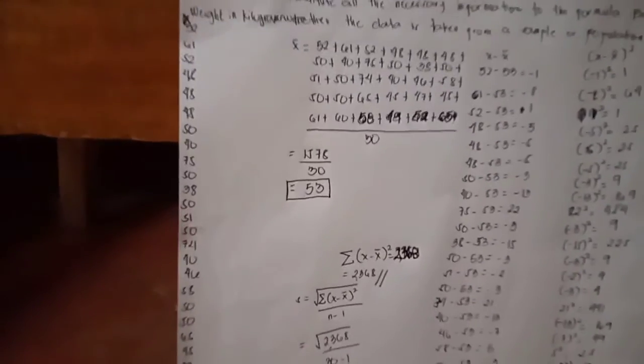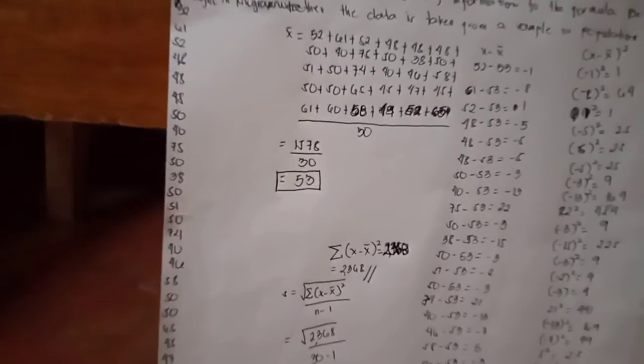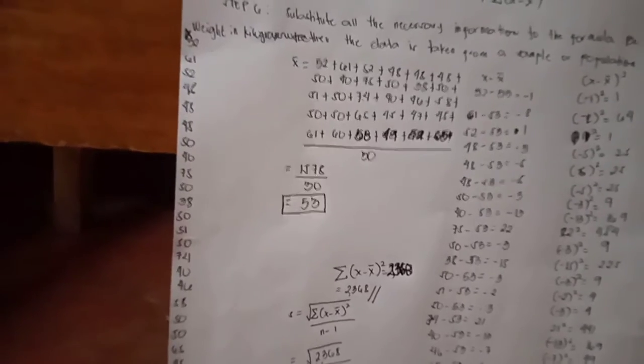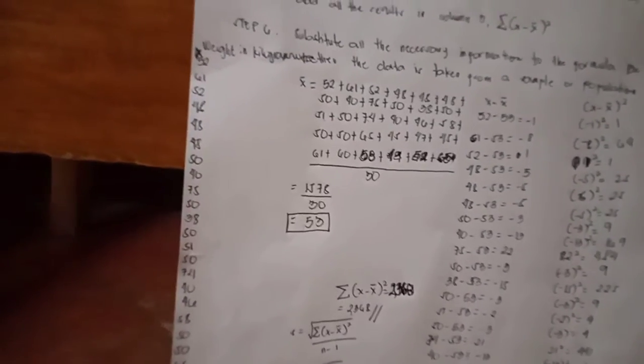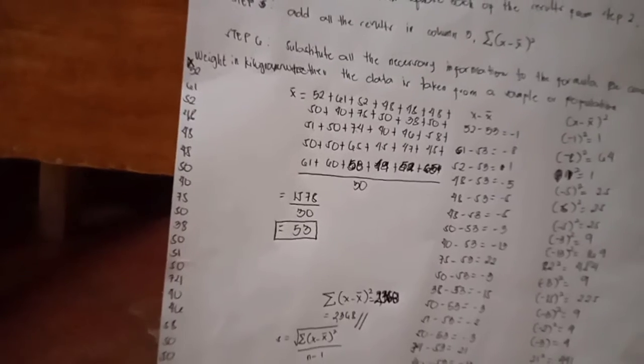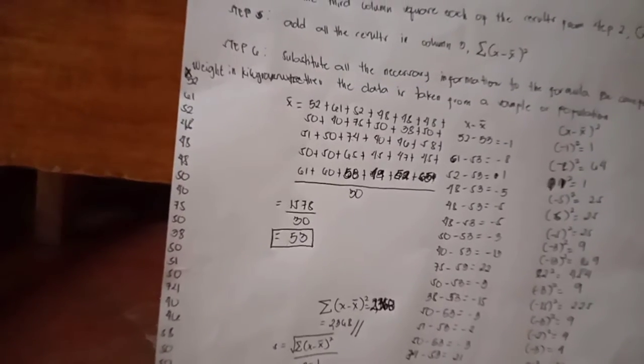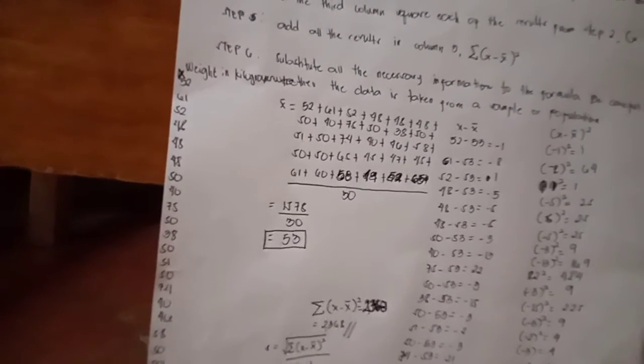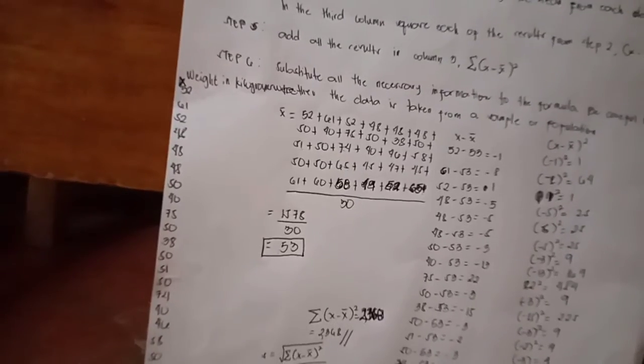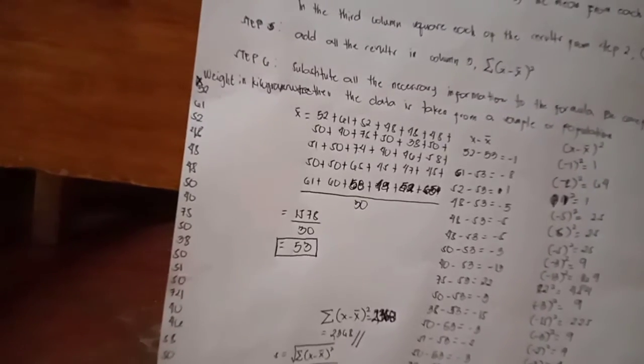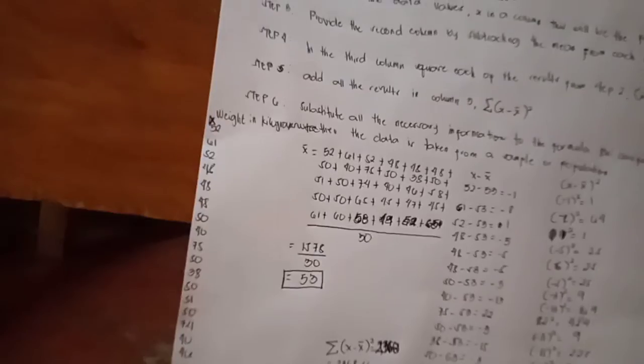For the last step, all we need to do is supply the necessary information to the formula of the standard deviation. It is the square root of the summation of the square between the difference of x and the mean divided by n minus 1.